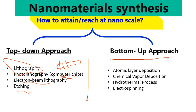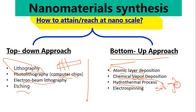Examples of bottom-up approaches include atomic layer deposition, where one atom at a time comes in to make a layer. There is also chemical vapor deposition, where atoms or molecules are chemically vaporized and then deposited. Similarly, the hydrothermal process, the sol-gel method — which is a solution-gel method — and also the electrospray method are all bottom-up approaches.